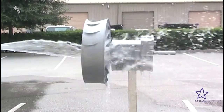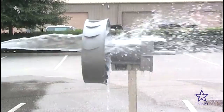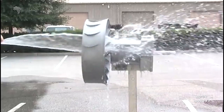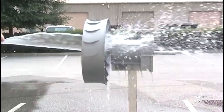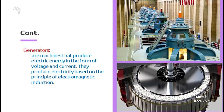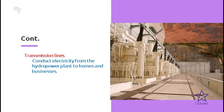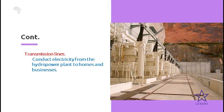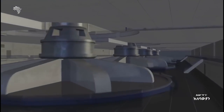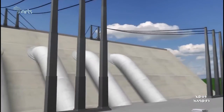A turbine is generally a machine that transforms rotational energy from a fluid picked up by a rotor system into usable work or energy. Generators are devices that convert mechanical energy into electrical energy. Transmission lines are interconnected lines that move electricity from generating stations to distribution substations, where it is transformed to lower voltage for customers.